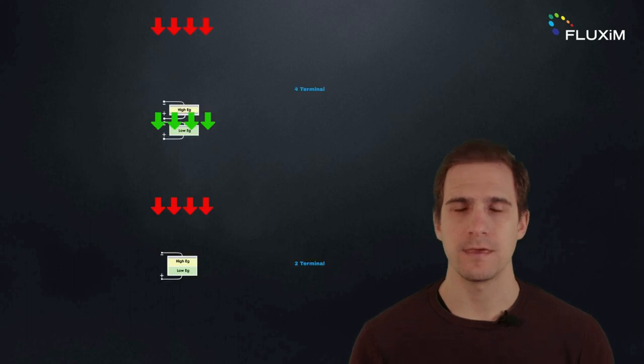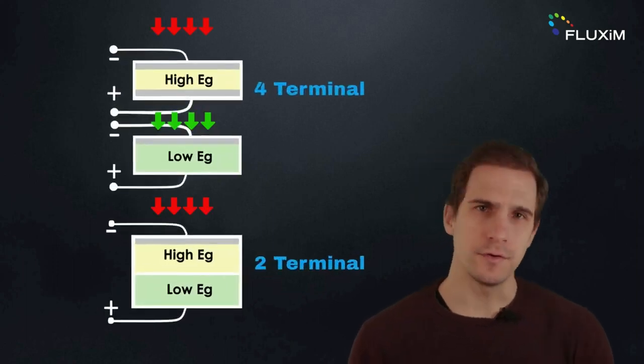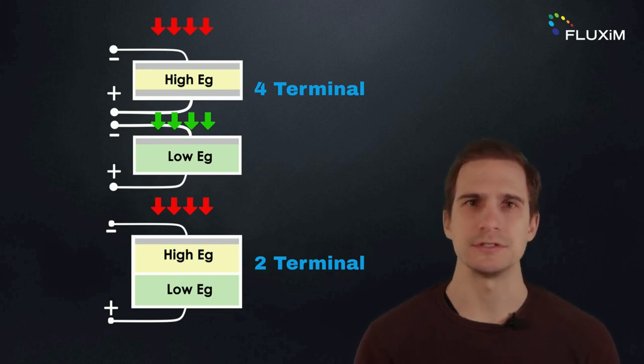A multi-junction solar cell with only two absorbing materials is a so-called tandem solar cell, and it is the most viable option for commercial use. They can be fabricated with four or two electrodes, also known as four-terminal and two-terminal tandem configurations.